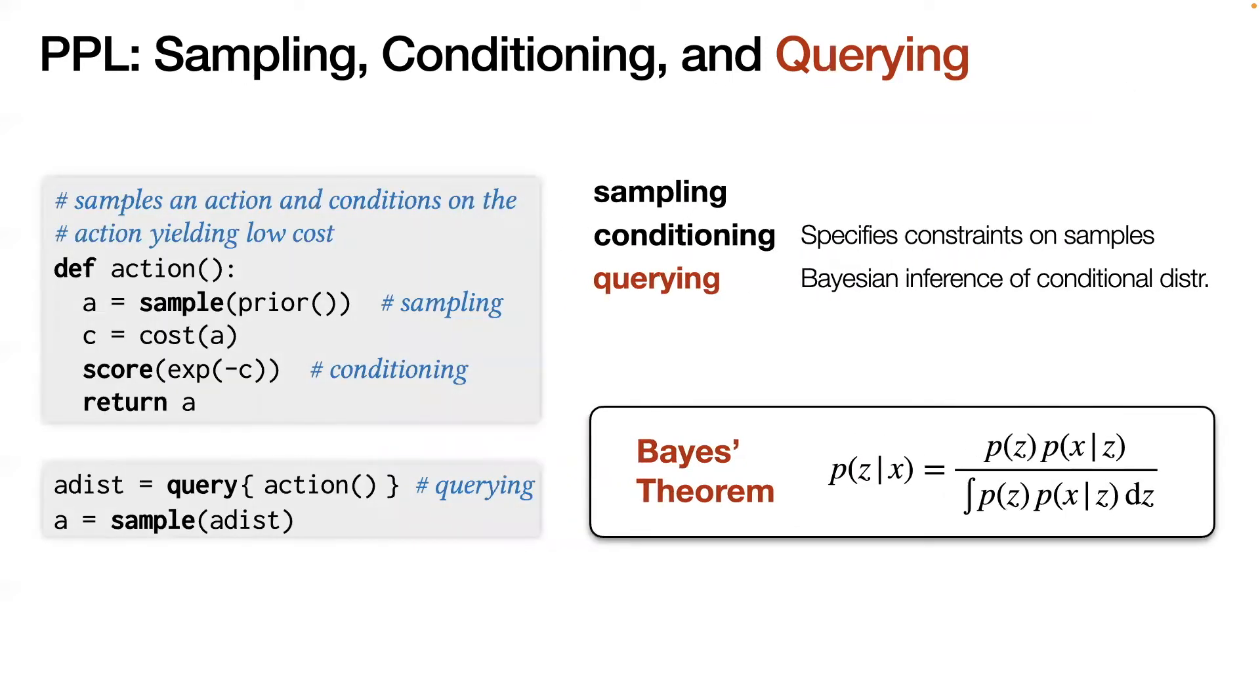As an example, we can use these three essential features of a PPL to model an agent that wants to reason about its possible choices of action and make a rational choice. The result of this querying is a conditional distribution of actions. Sampling this distribution yields a good action.